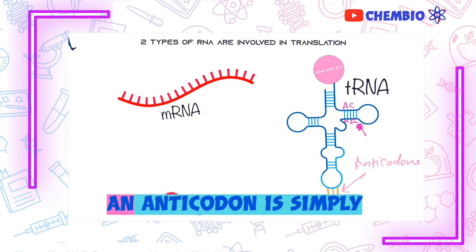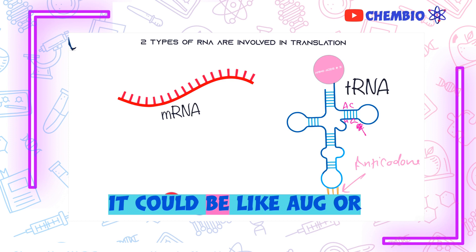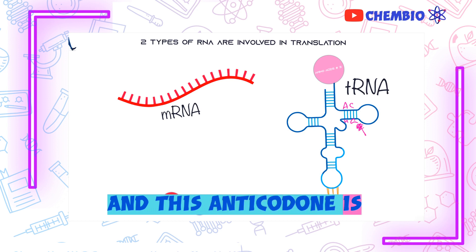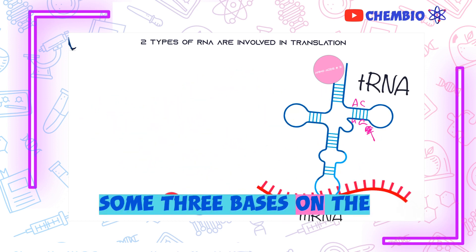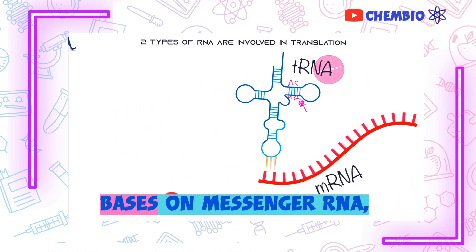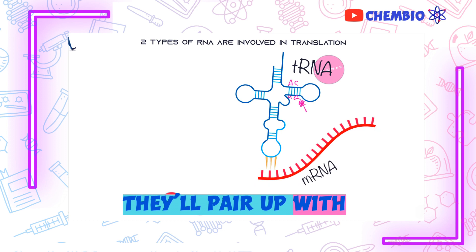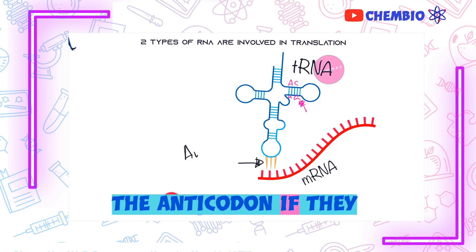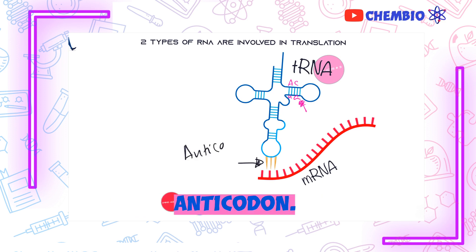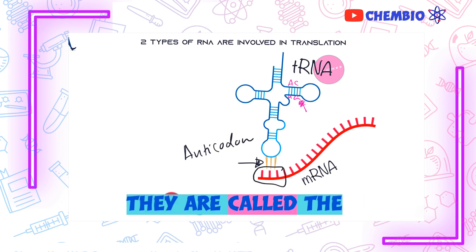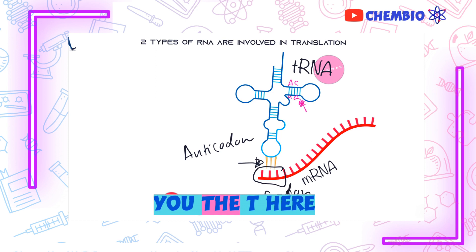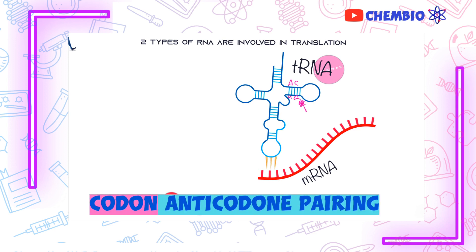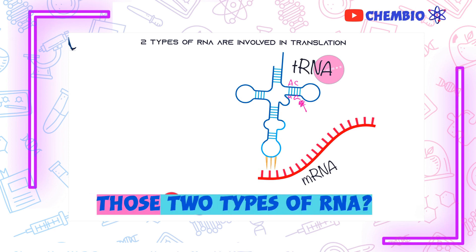We call those three bases at the bottom the anticodons. An anticodon is simply three RNA bases — it could be A, U, G or A, C, G. This anticodon is simply there to pair up with three bases on the messenger RNA. Every three bases on the messenger RNA pair up with three bases on the tRNA. Those three bases on the tRNA are called the anticodon, and the three bases on the messenger are called the codons. It's easy to remember: the 'T' corresponds to the tRNA.